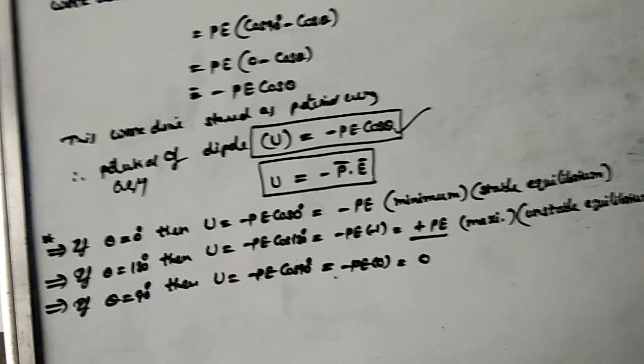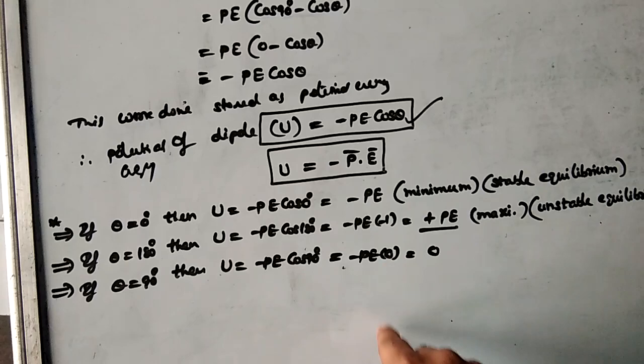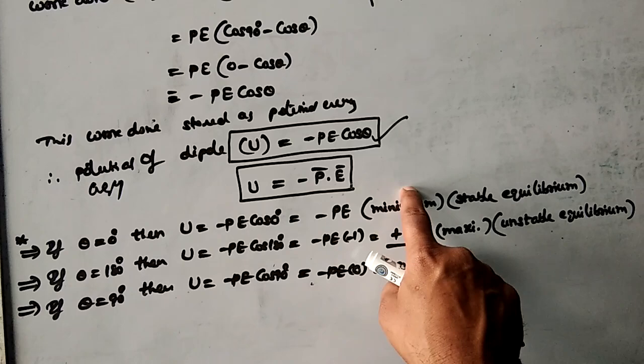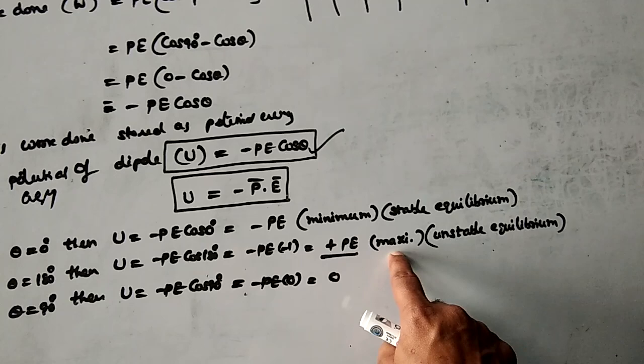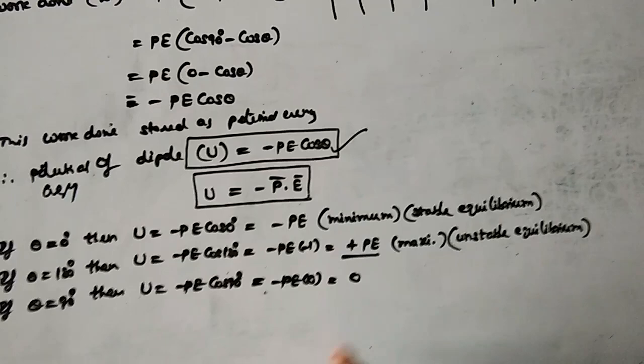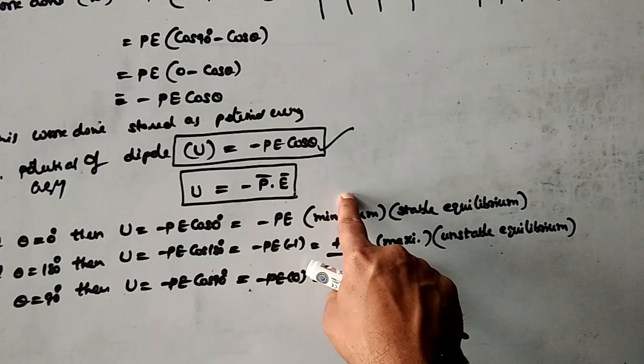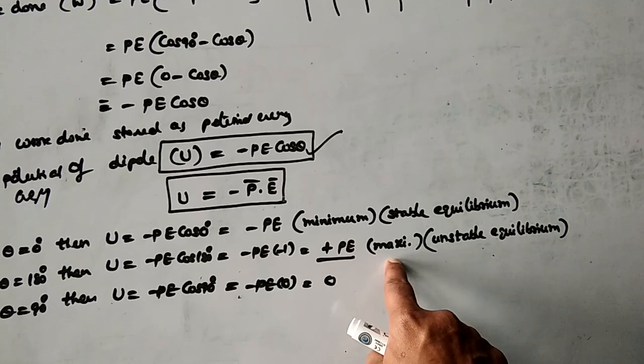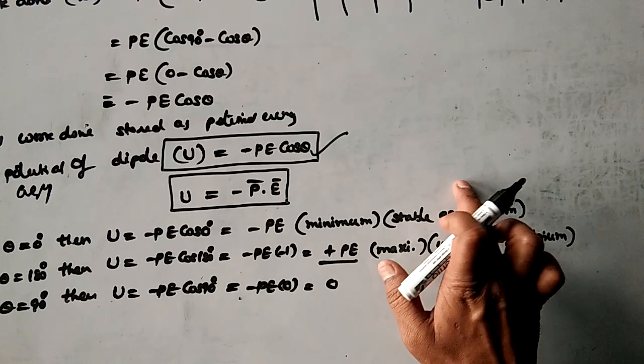Out of all these three values, +PE is the highest — maximum value, and −PE is the lowest — minimum value. So the dipole will have maximum energy at θ = 180°, and minimum energy at θ = 0°. As I told you in 11th class, if energy is more, the system is unstable. So maximum potential energy indicates unstable equilibrium, and minimum energy indicates stable equilibrium.